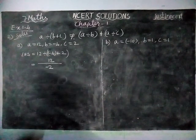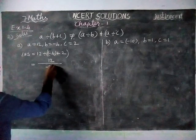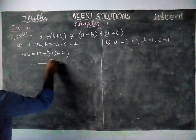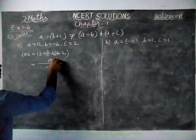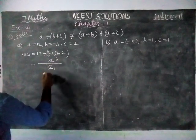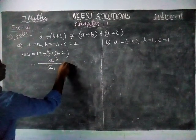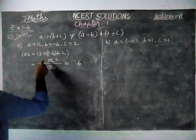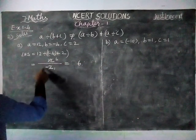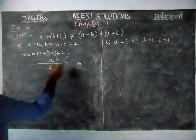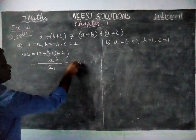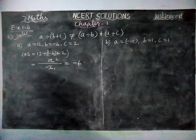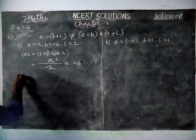When we simplify, 6 twos are 12, so the answer is 6. And when we are dividing, if signs are different, the answer is minus 6.